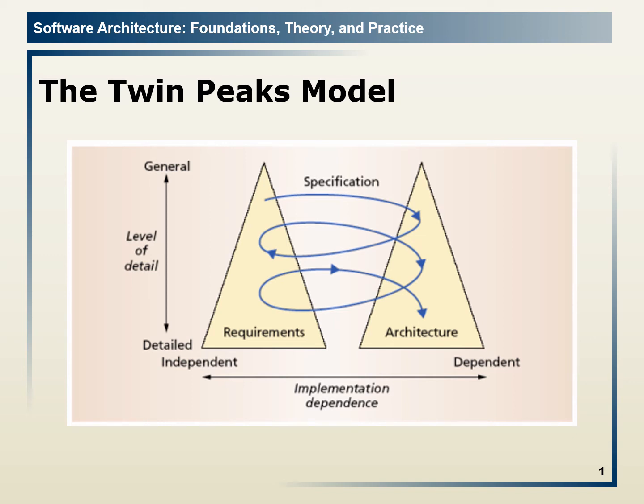Slide number 11: the Twin Peaks model. The Twin Peaks model — looking at a slide with two rectangles and a spiral which is connected to each other. If you are looking at it, it is possible that you can understand, but unfortunately we don't have that privilege. So let me tell you.